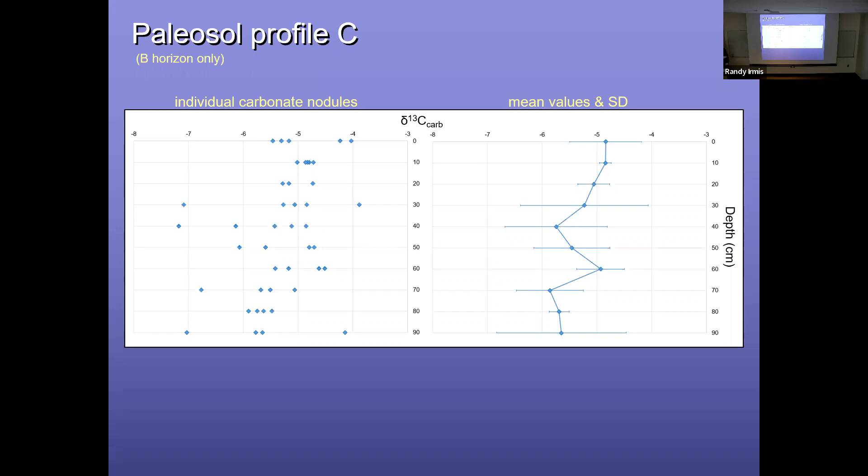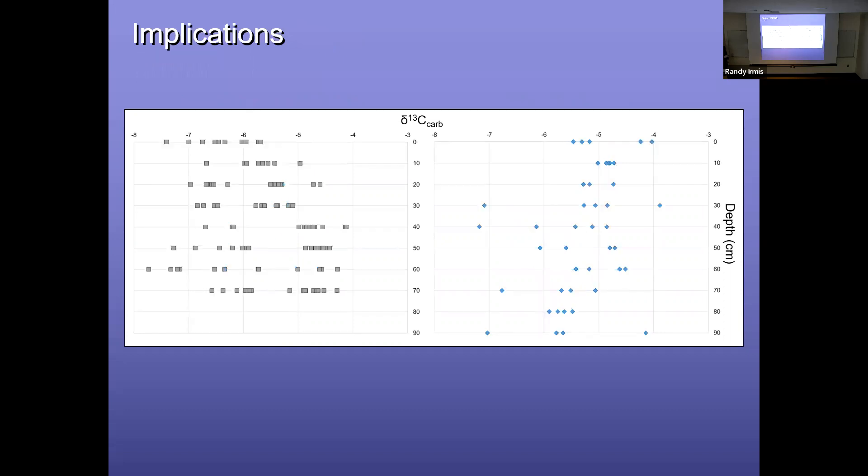But I think there are implications to be learned here in the sense that it's probably not advisable just to measure down from the top of the B horizon and take a point sample at X centimeters depth and say, okay, I've sampled deep enough to calculate PCO2. And even if you take individual samples from throughout the soil profile, they may or may not reflect sort of the mean values at equilibrium.